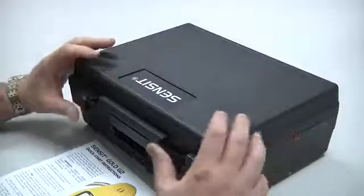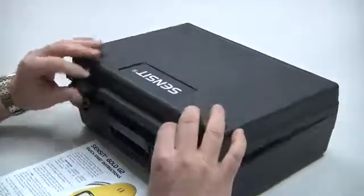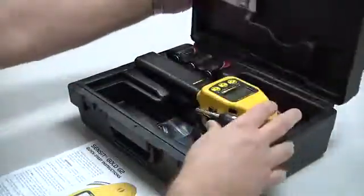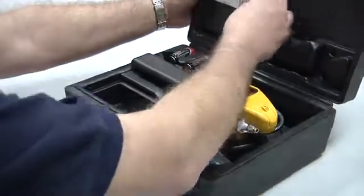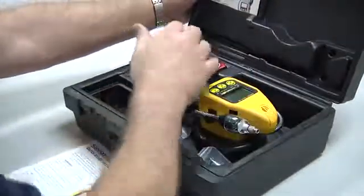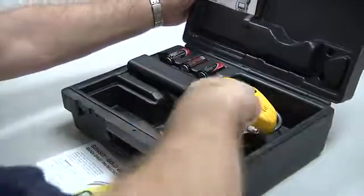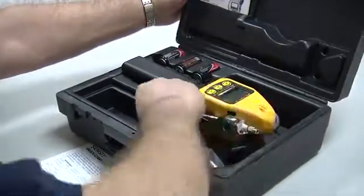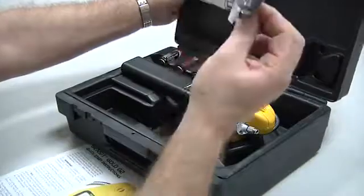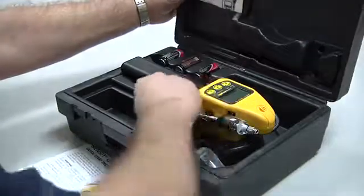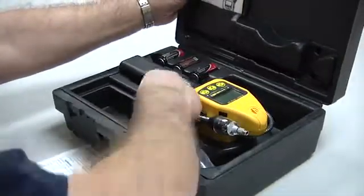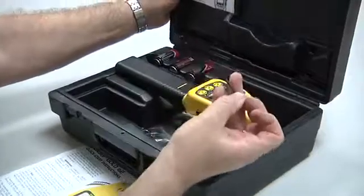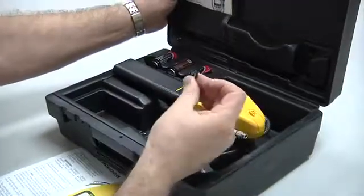When you receive your Sensit Gold G2 it will come in this hard carrying case and inside the carrying case we have an instruction manual, the alkaline batteries, the three C cells, we have an additional sensor cap and filter, we have a wrist strap for connection to the instrument, as well as a battery removal tool.